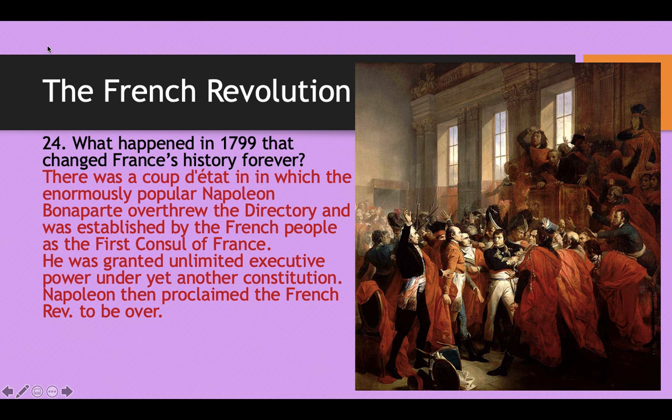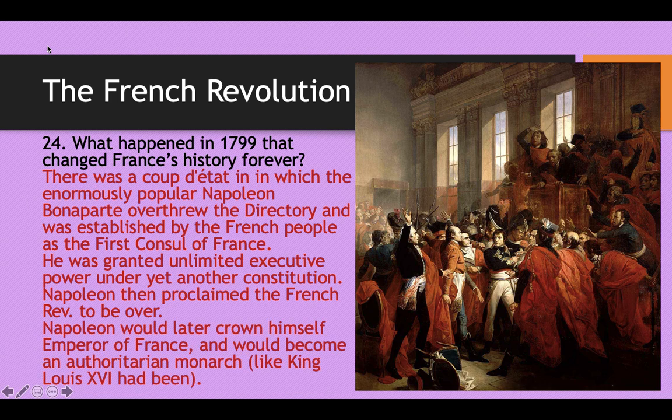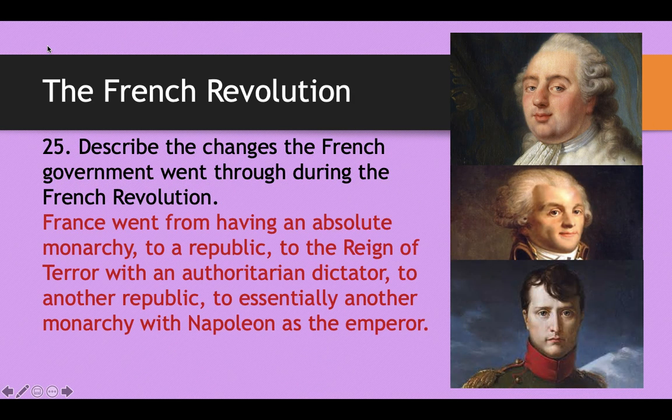Napoleon was granted unlimited power under yet another constitution — so many different constitutions, so many governments, so many riots — just a big cycle that went around and around. When he took power, Napoleon proclaimed the revolution to be over. Napoleon would later crown himself Emperor of France, becoming an authoritarian monarch very much like King Louis XVI had been — which is exactly why the French Revolution was fought in the first place.